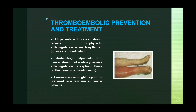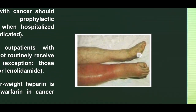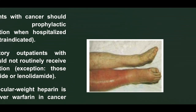Thromboembolic conditions like DVT can develop after certain malignancies, especially stomach and pancreatic cancer. All patients with cancer should receive prophylactic anticoagulation when hospitalized unless contraindicated. Ambulatory outpatients with cancer should not routinely receive anticoagulation, except those on thalidomide or lenalidomide. Low molecular weight heparin is preferred over warfarin in cancer patients. This picture shows asymmetric leg swelling and redness suggesting DVT, requiring Doppler ultrasound for diagnosis.